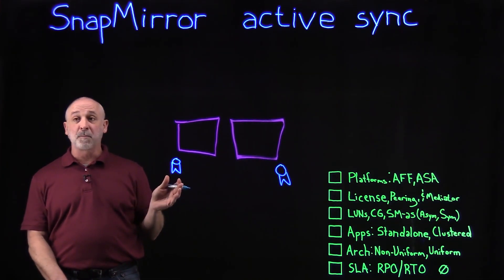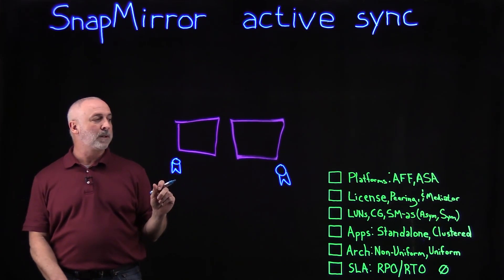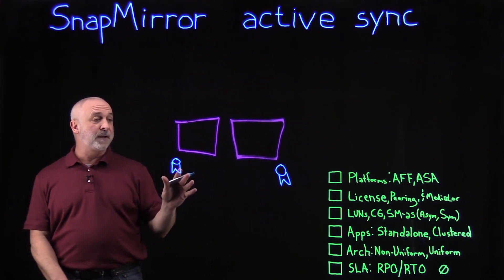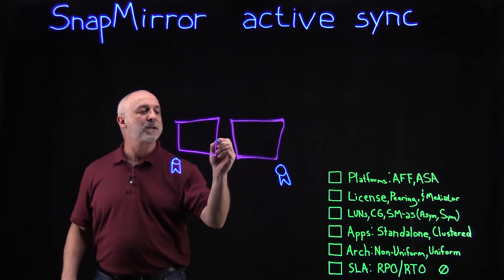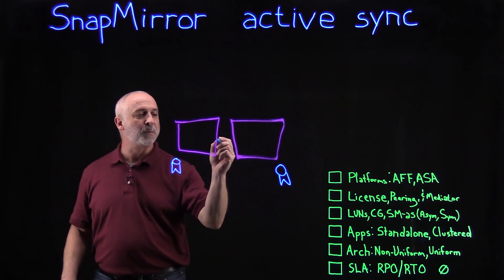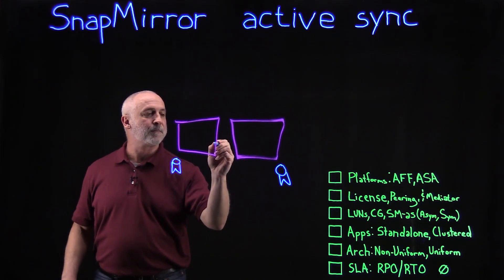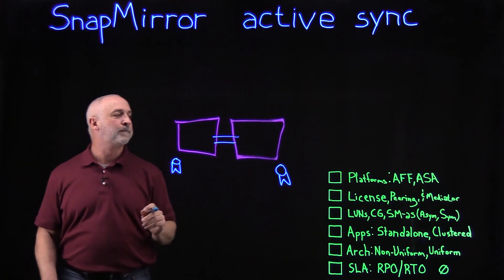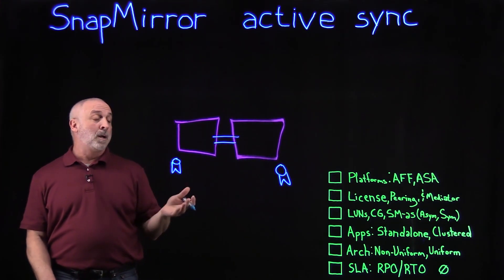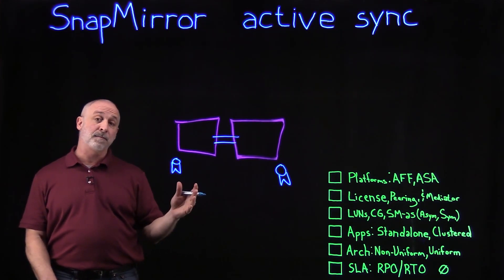Once licensing is complete, we can start to deploy and configure these systems. First, we need to peer our two clusters. In addition to the peering, we need to deploy a mediator.